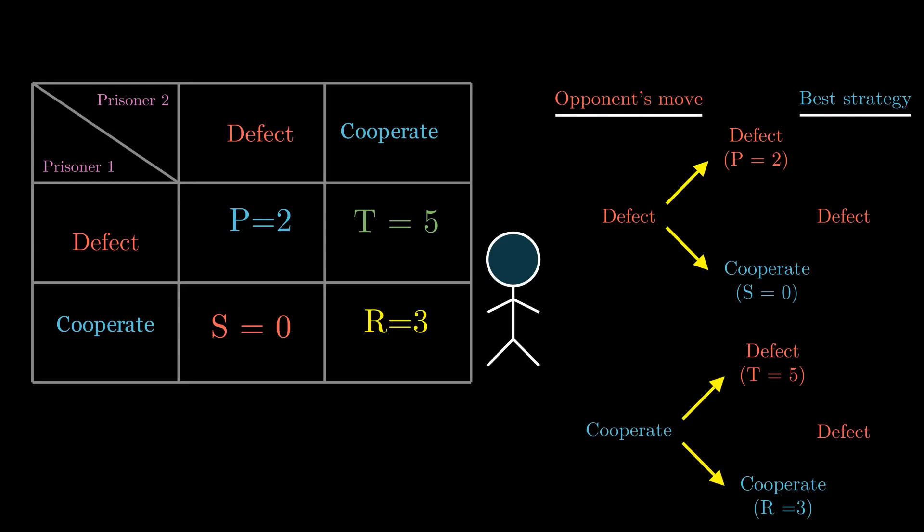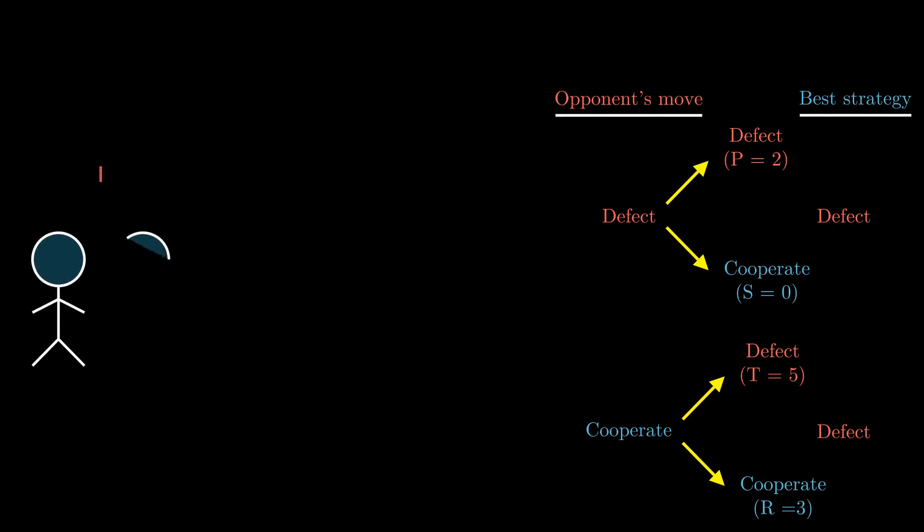So even though through a group's perspective, cooperating seems to be the best strategy because it amasses the duo six points, but through an individual lens, defecting is the best strategy for both of them. It is called the dominant strategy or the equilibrium.